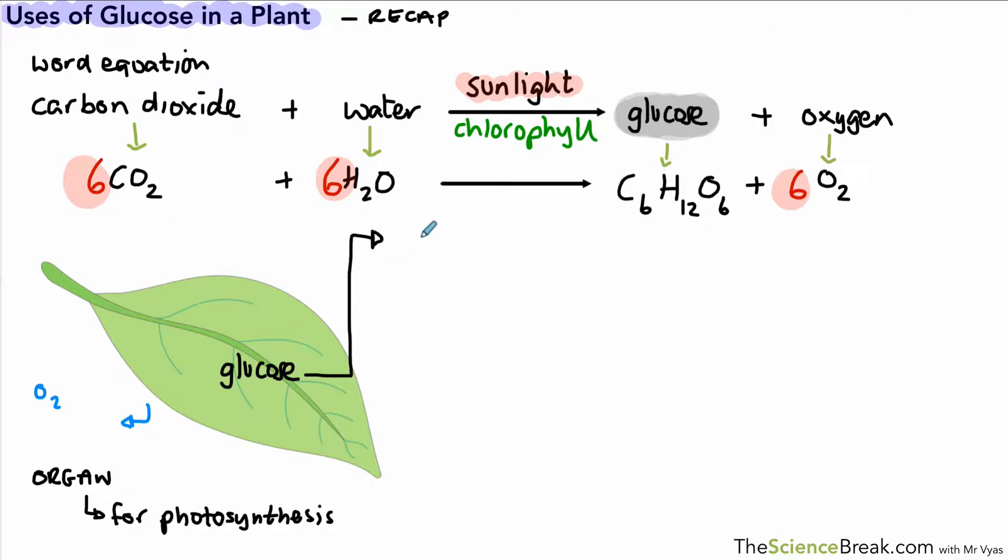So what's the first use of glucose? Well, same as in animals, the first use is to release energy from the process of respiration. So respiration will release energy and the plants will use it to build molecules, to break down molecules, and they need to respire just the same as any other living thing.